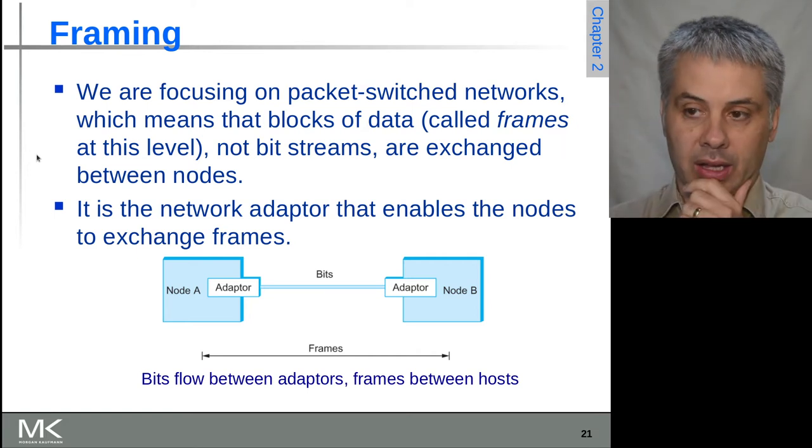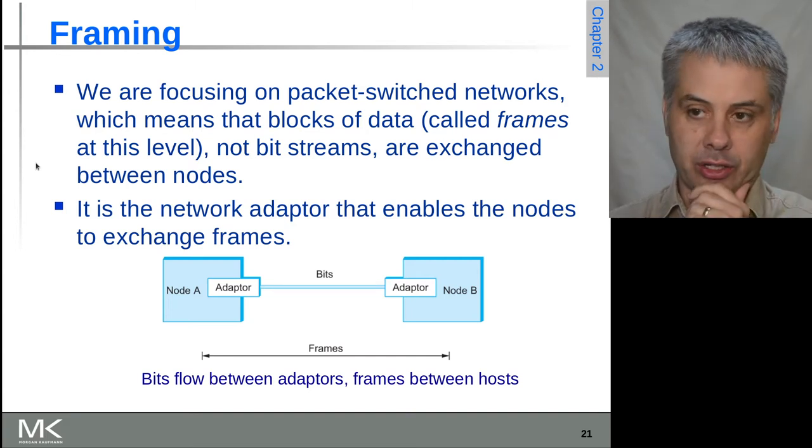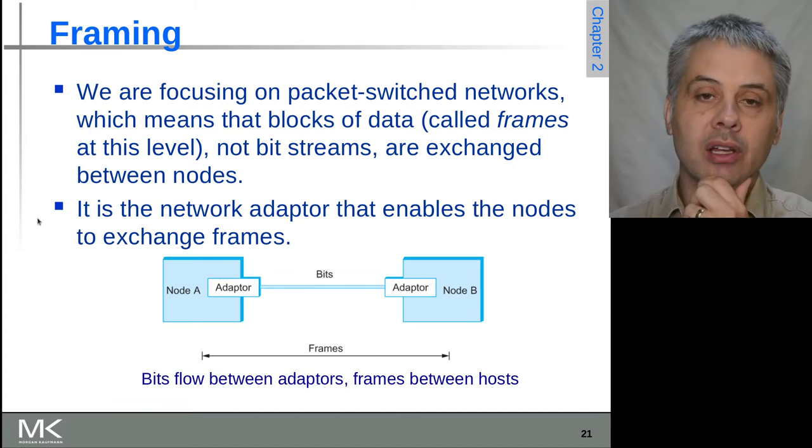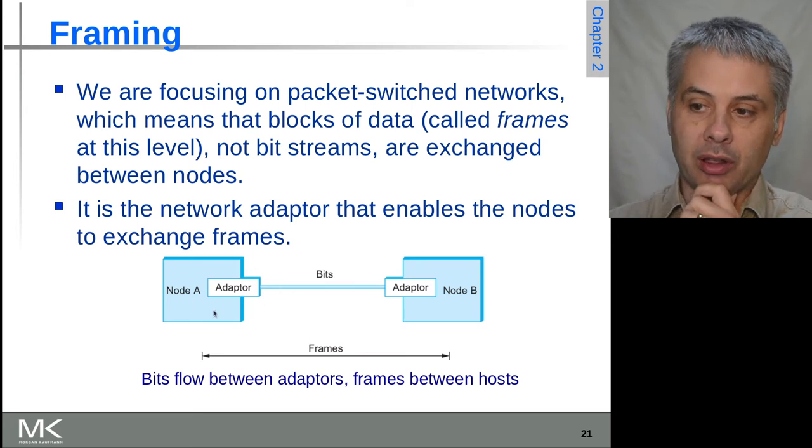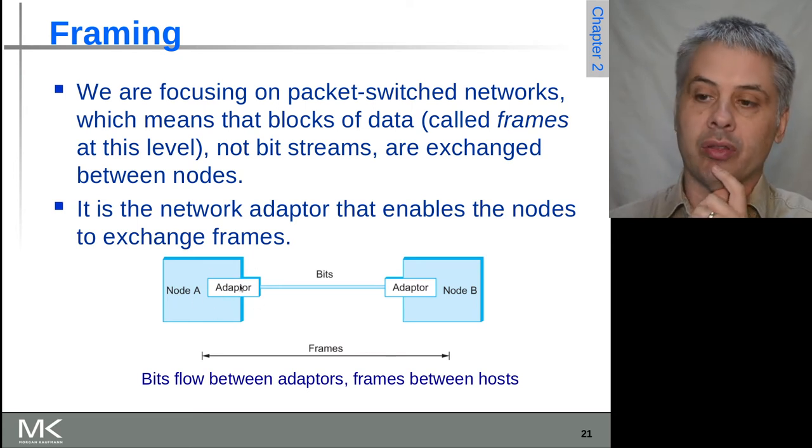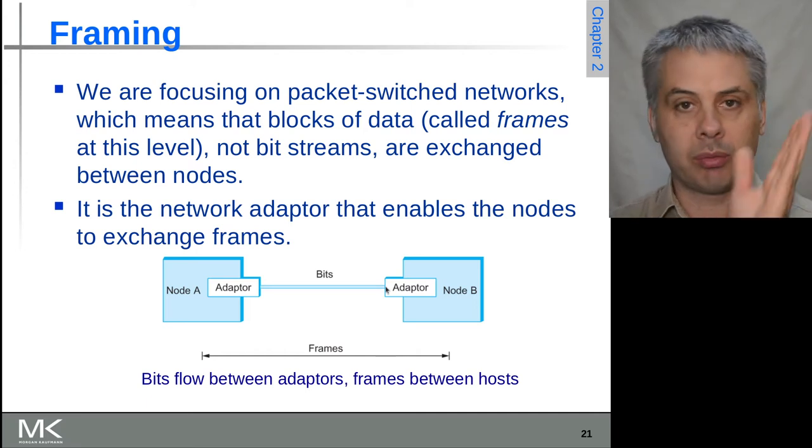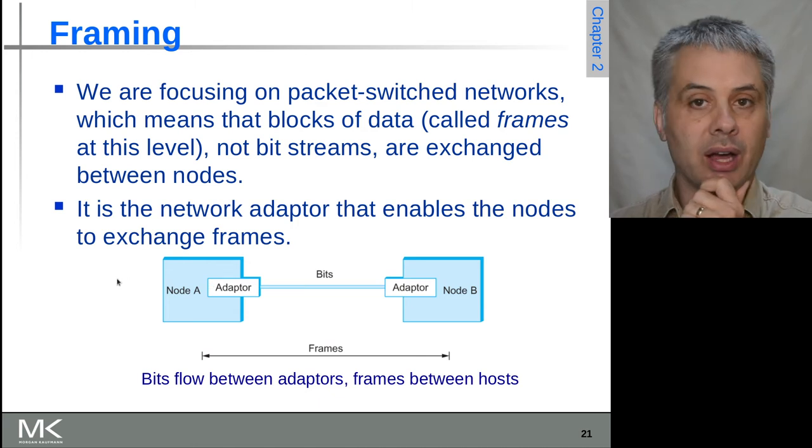The bit stream is what the physical link is carrying, but now we want to move up above that and actually be able to have frames of data. So this is Ethernet—we're talking about Ethernet frames for exactly this reason. And it's the network adapter that's still responsible for doing this, so the network adapter is sending bits, they're encoded bits, and now it has to mark where the ends of those data frames are.